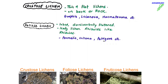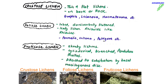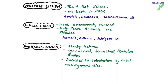Third are fruticose lichens — these are shrubby lichens that are cylindrical, branched, and pendulous or straight, with a fruiting body. They hang like a pendulous structure. They are attached to the substratum by a mucigenous disc. Examples of fruticose lichens are Cladonia, Usnea, and Alectoria.